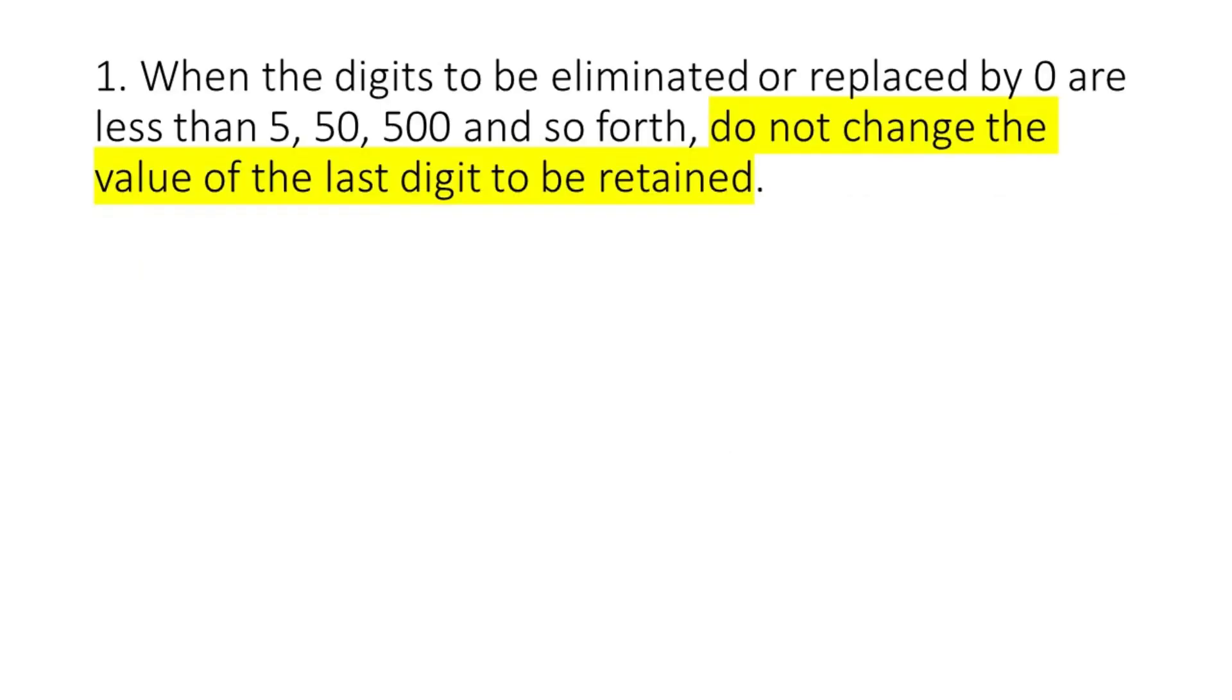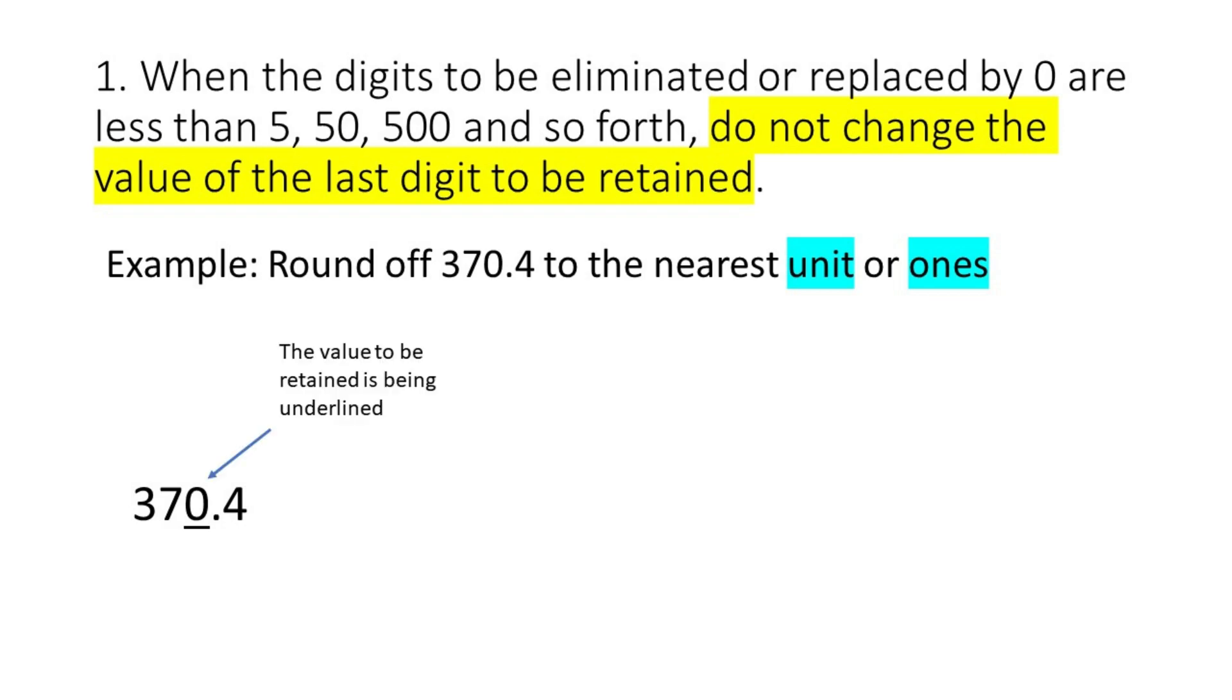Here is an example under rule number 1. If we round off 370.4 to the nearest unit, that means we should eliminate 0.4. Since 0.4 is less than 0.5, we shall not change the digit to be retained. Hence our answer is 370.